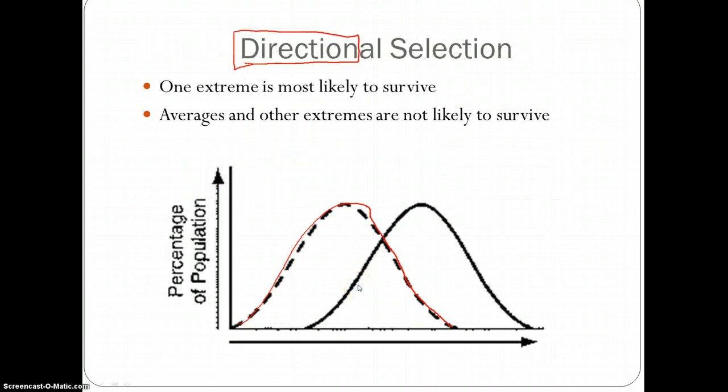If we look at the directional selection curve, we'll notice that it has moved towards the right. By moving towards the right, this is one extreme. This is the second extreme since now we have moved in the right direction. What directional selection says is that the averages and the other extremes are not likely to survive. Meaning that only one extreme will survive longer.